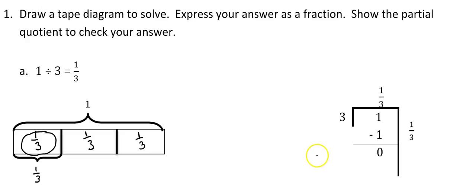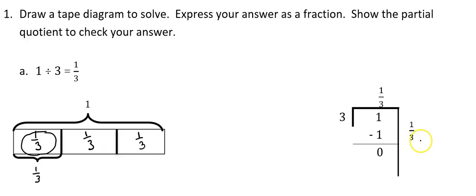Over here, we've done the same problem using the forgiving method of division. In the division bracket, the dividend goes on the inside and the divisor on the outside. The question I can ask myself is: what could I take three times to get me an answer of 1? The answer is 1 third. Three times 1 third is 1 third plus 1 third plus 1 third, which equals 3 thirds, which equals 1. So I subtract that — 1 minus 1 is 0 — and my answer is 1 third.